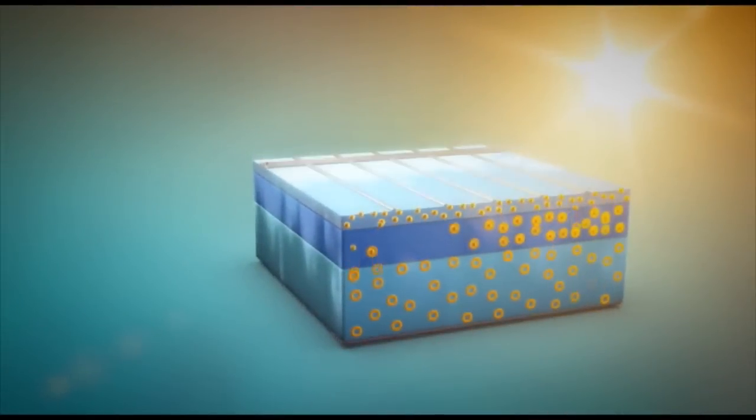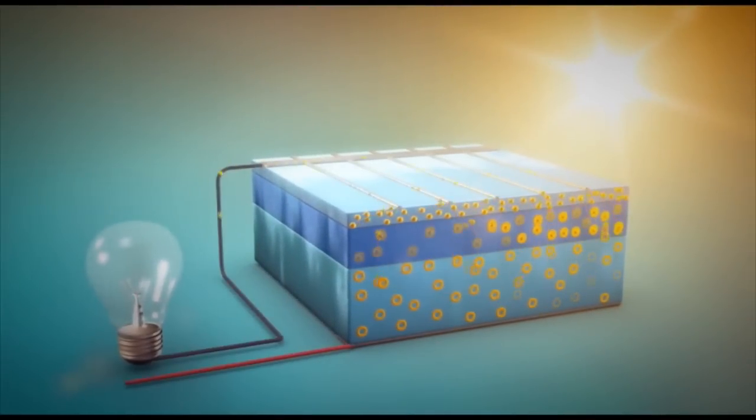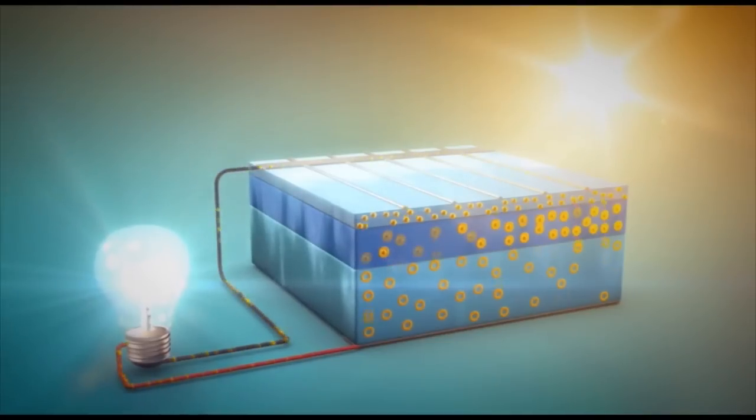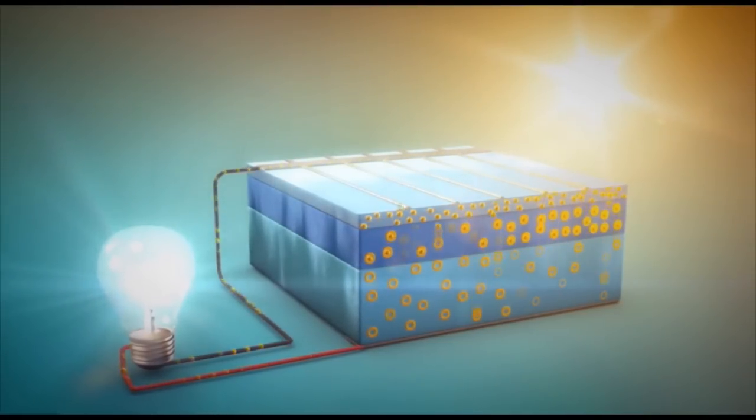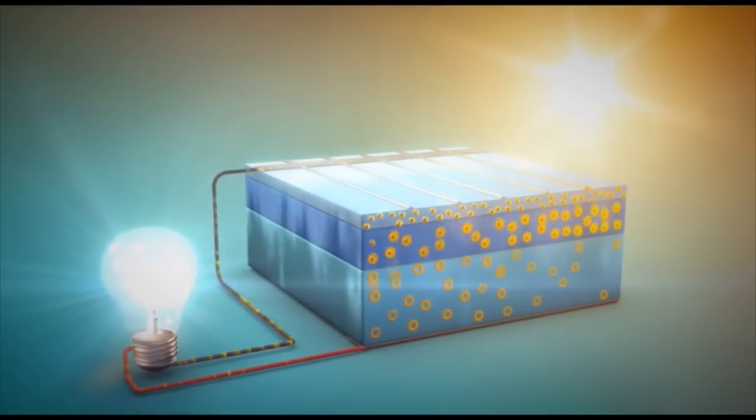If contacts are applied, the charge carriers will take the path of least resistance, which in turn generates a flow of electrons or electrical current illustrating the photovoltaic principle.